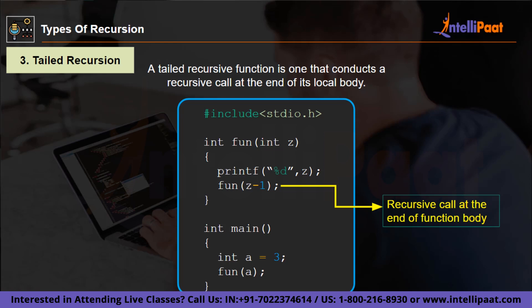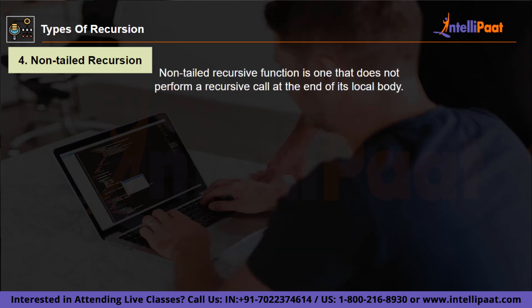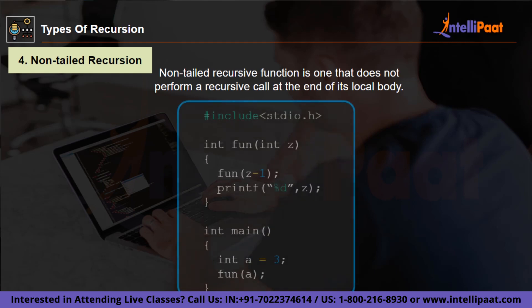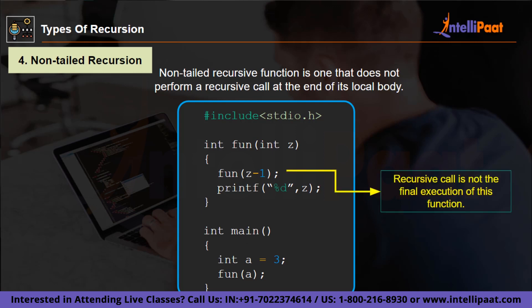Lastly, we have non-tailed recursion, also called head recursion. The initial statement in a function will be the recursive call if the function does one on its own, implying that no statement or operation should be called prior to the recursive call. As you can see in this example, the very first statement in the fun function is a recursive call itself, and it is not the final execution of this function.